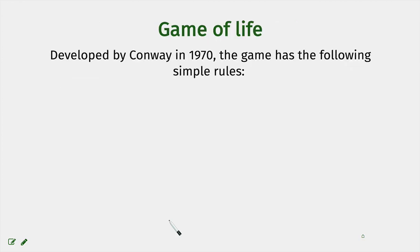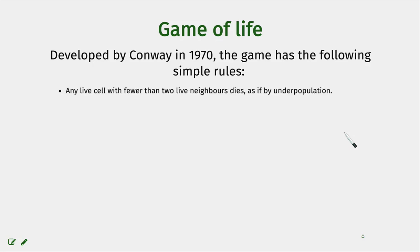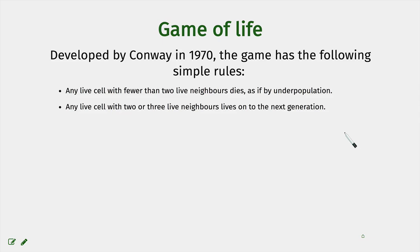One of the first examples of cellular automata is the Game of Life, which was developed in 1970. The game has very simple rules. A live cell which has fewer than two live neighbors dies. A live cell which has two or three live neighbors lives to the next generation — it stays alive in the next time step. A live cell which has more than three live neighbors also dies.